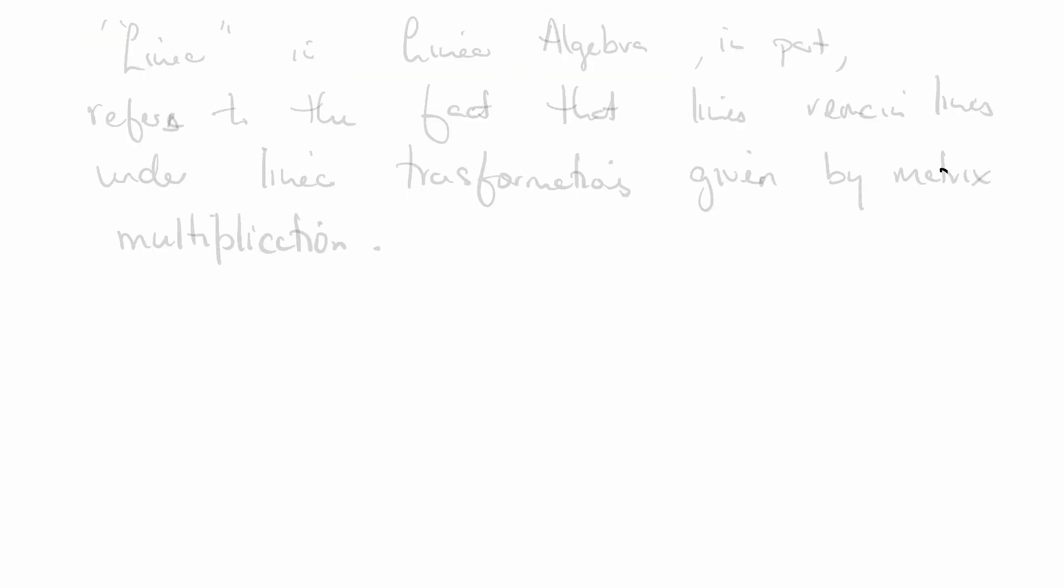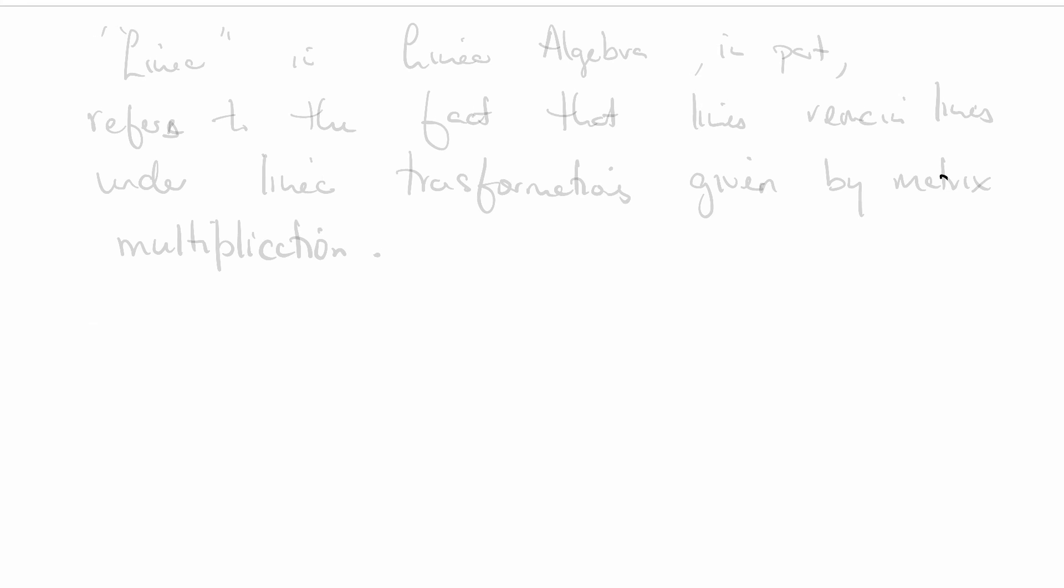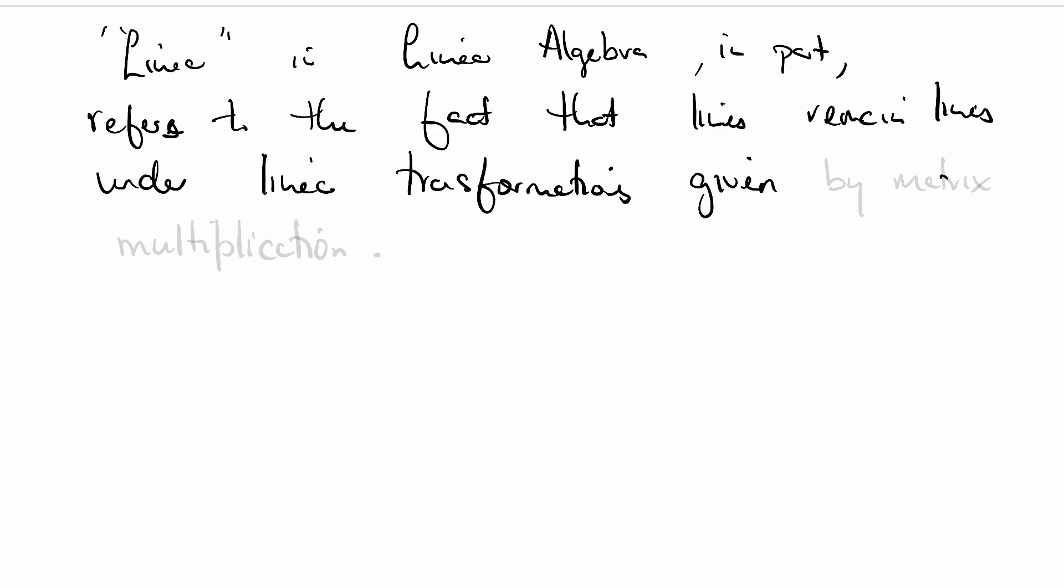Here's what we've done. We've just given some examples of two-by-two matrices representing transformations of space. You have reflections. We have shears. The example that you worked out is a projection. And this is just to give us a beginning of an understanding of what's going on in linear algebra, more generally. The linear in linear algebra, in part, refers to the fact that lines remain lines under linear transformations given by matrix multiplication. And we explored this through a few examples.